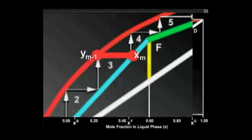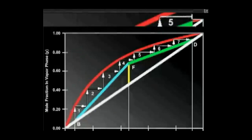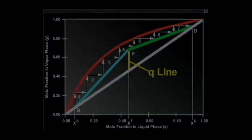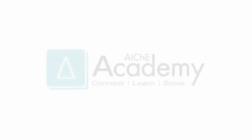Finally, the Q line determines the transition between the upper and lower operating lines.